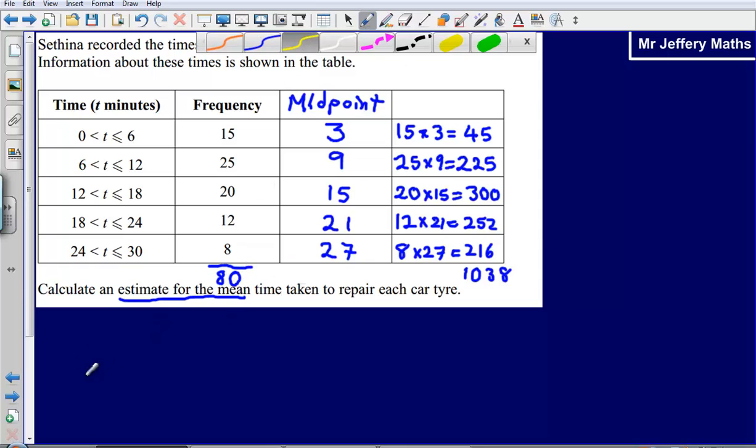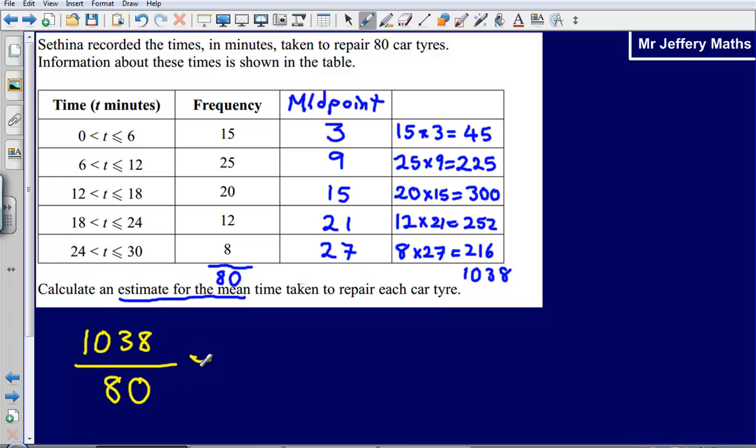And then we simply divide the totals by each other. So 1038 divided by 80, and that's going to give me an answer of 12.975.